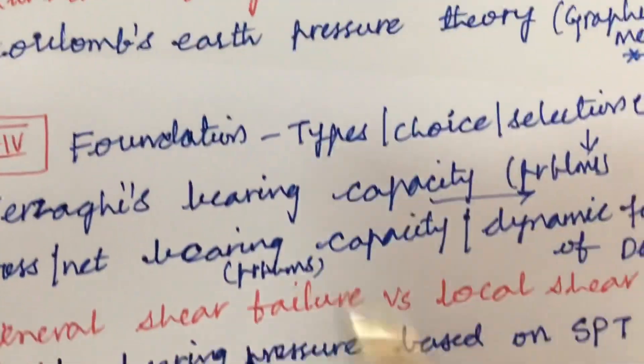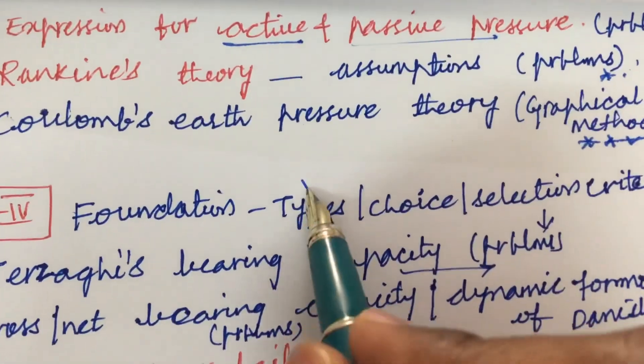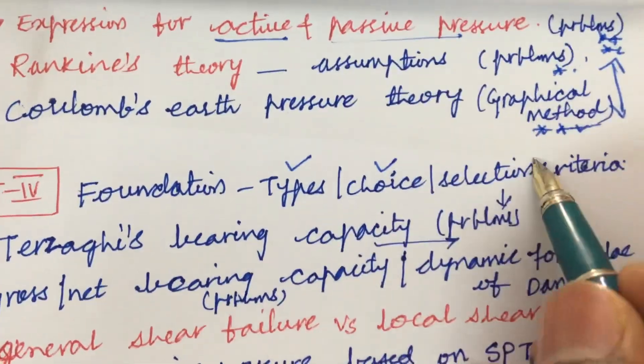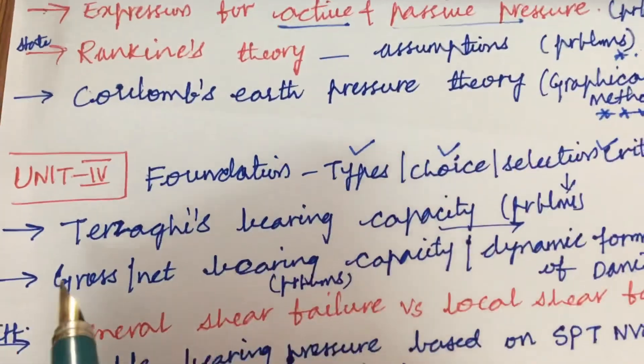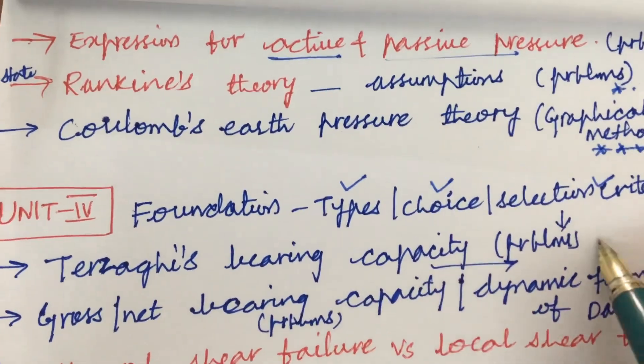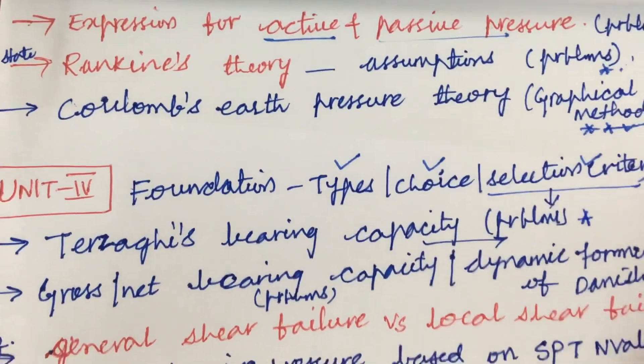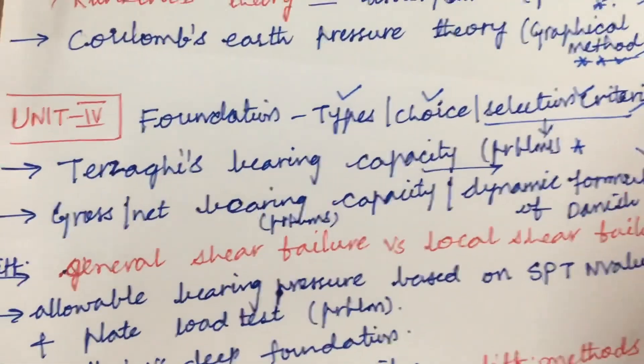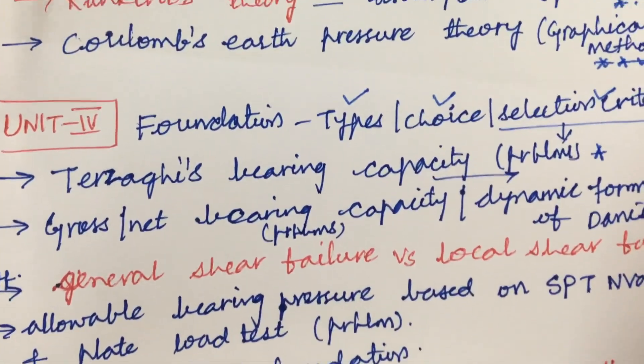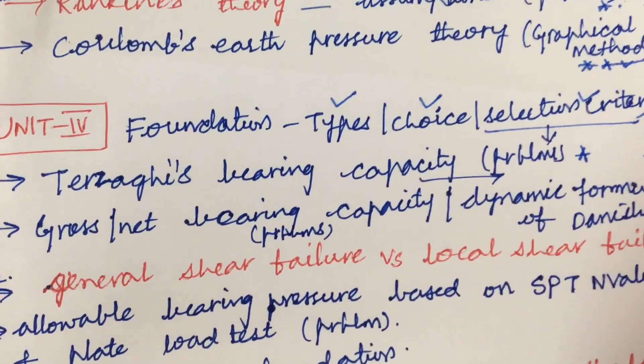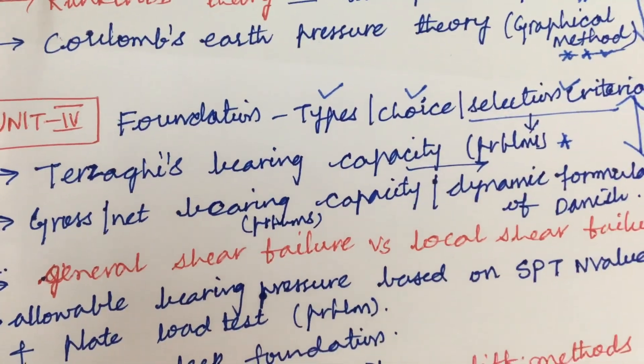Later, the fourth unit is all about the different types of foundations as well as its choice and the selection criteria, as well as Terzaghi's bearing capacity and the problems related to the selection criteria. From these concepts we can expect only one question because from fourth and fifth units as per the COVID pattern, from first three units they will be asking three, six questions, and the later two units two questions.